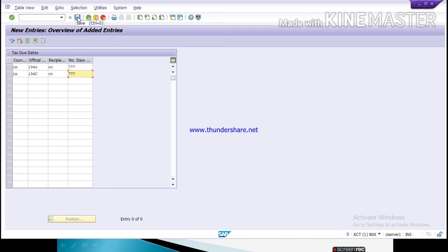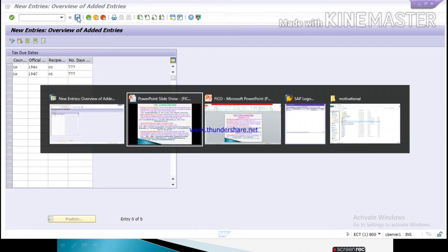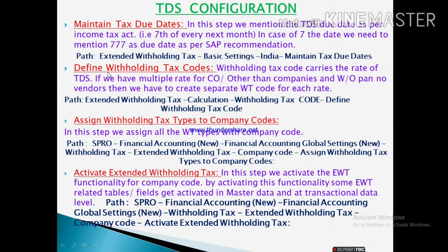So friends, like this you have to define a tax due date. The next step is to define withholding tax codes. Withholding tax codes carry the rate of TDS — they define what percentage rate of TDS applies.